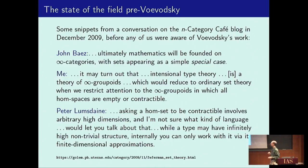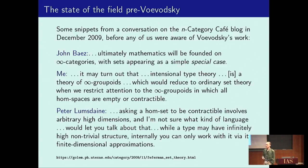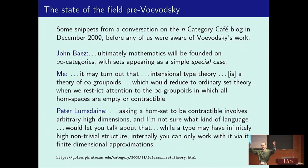John suggests that mathematics should be founded on infinity categories with sets as a special case, the same way we end up doing it in univalent foundations. I mentioned this idea of intensional type theory because I knew about Peter Lumsdaine and Benno van den Berg and Richard Garner, who had been proving things about the groupoid structure of types, and the idea that we would reduce to ordinary set theory when we restrict to the infinity groupoid where all hom spaces are empty or contractible.